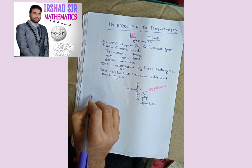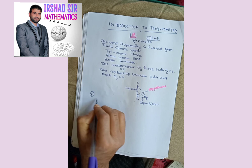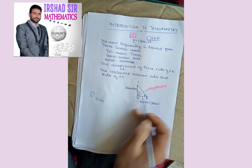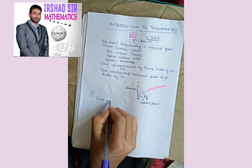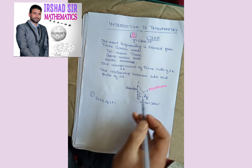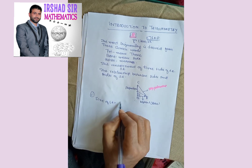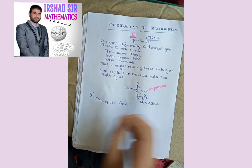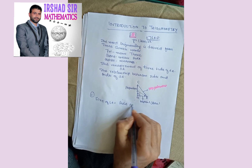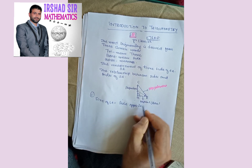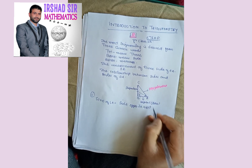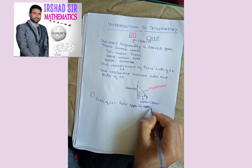Now we have the six trigonometric ratios. The first ratio is sine. If we are taking angle A, then sine of angle A is the side opposite to the acute angle divided by — that is, BC — over the hypotenuse AC.